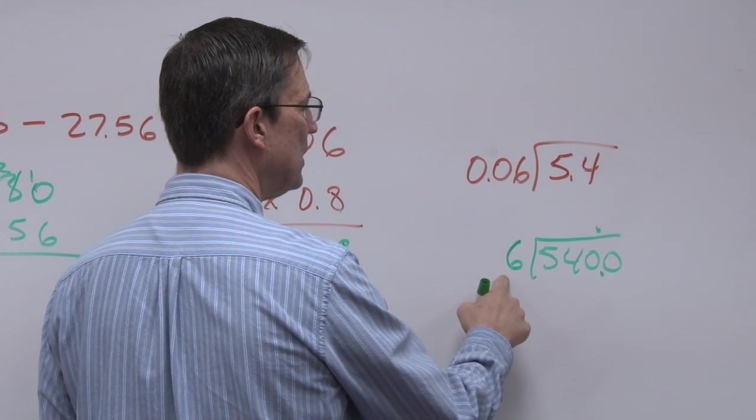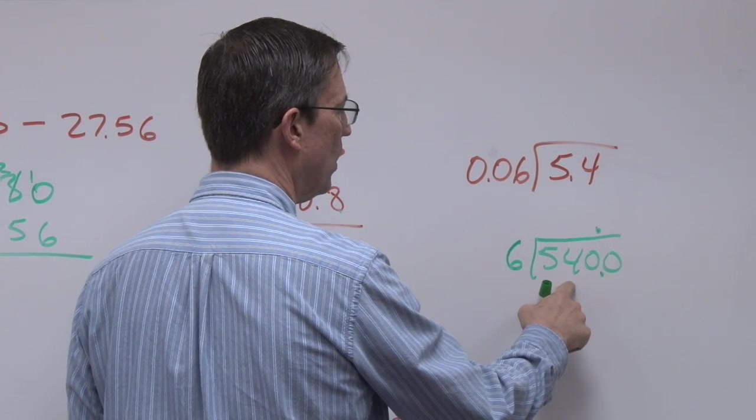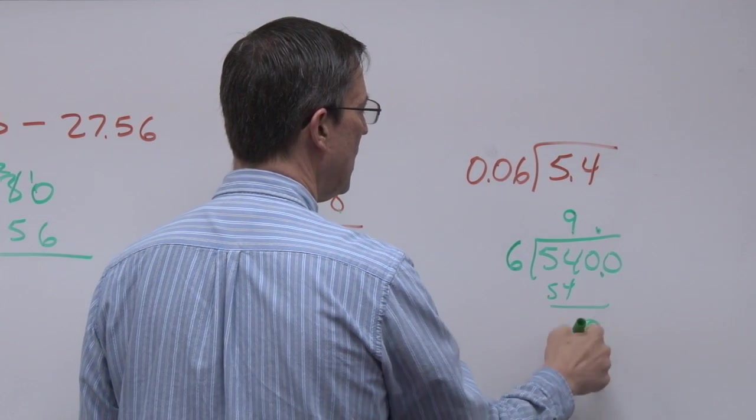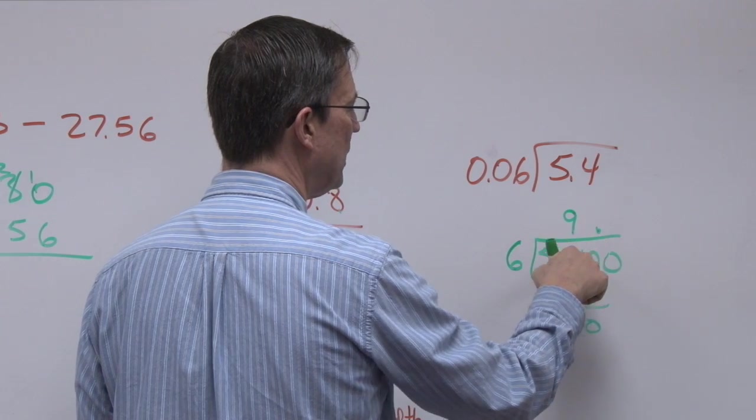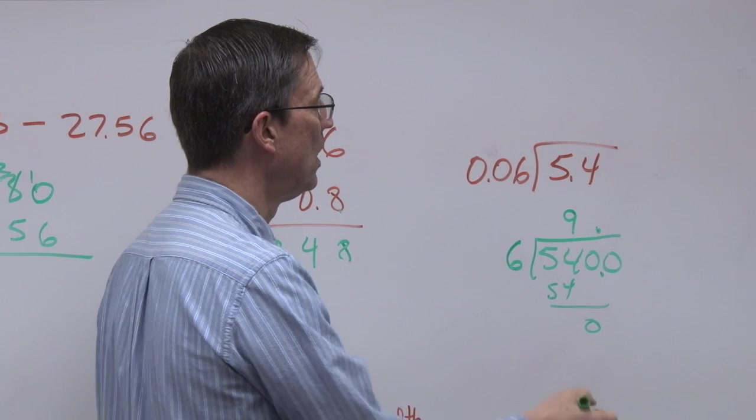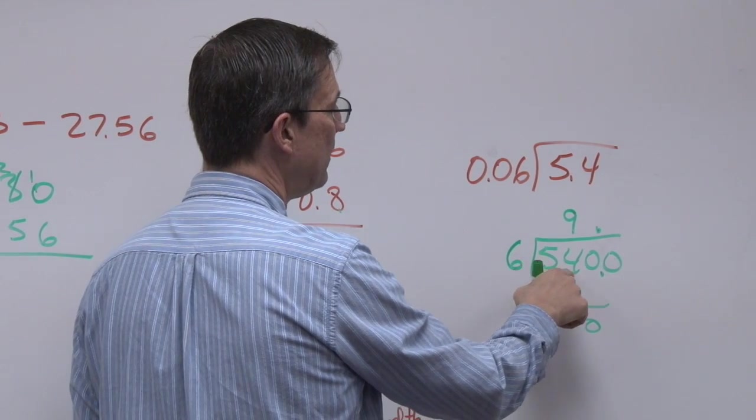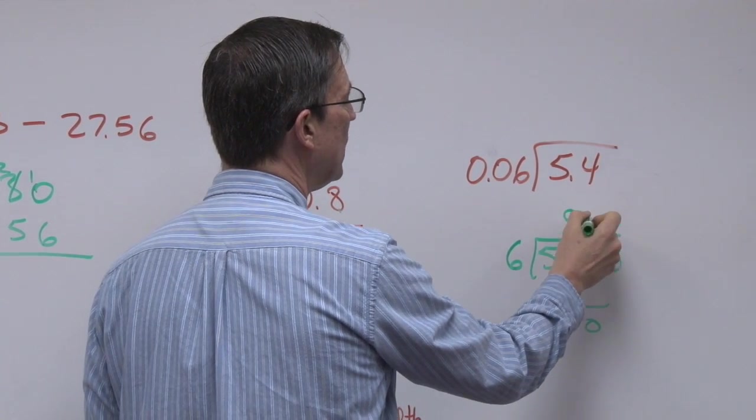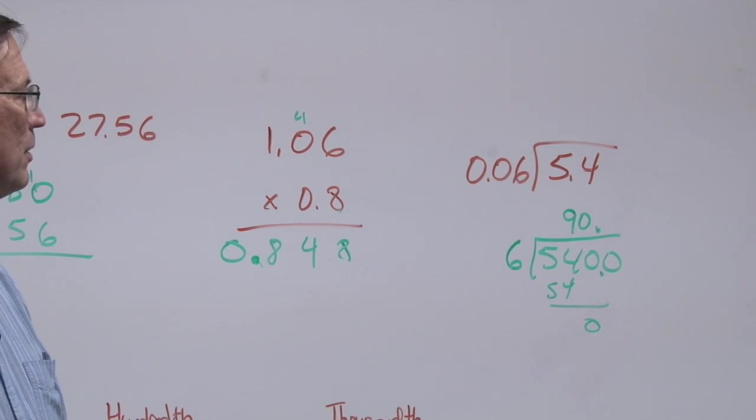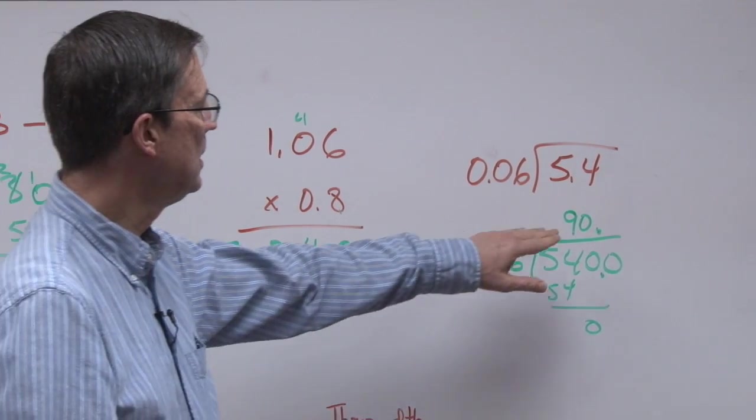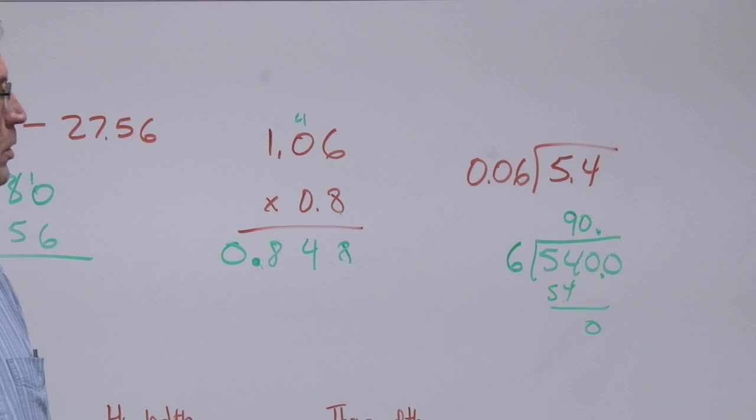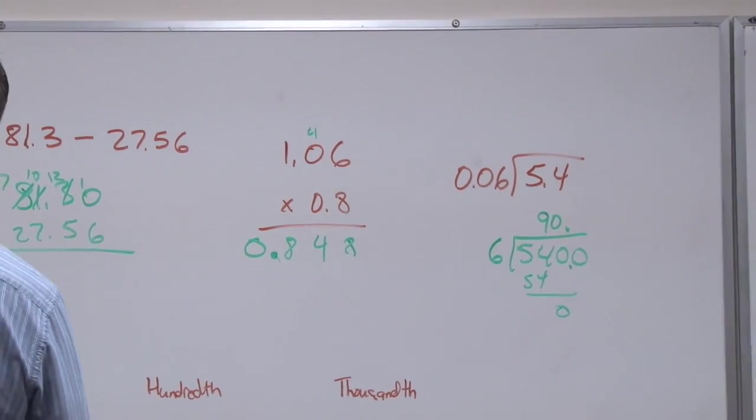Now I can divide 6 into 54. That goes 9 times. And I have the decimal over here, but the 9 here. The answer is not 9, because 6 times 9 is 54. I need to get 540. So we have to put that placeholder 0. So the answer is 90. And you can check any of these. You can take 90 times 0.06, and then move the decimal, and you would have the answer.